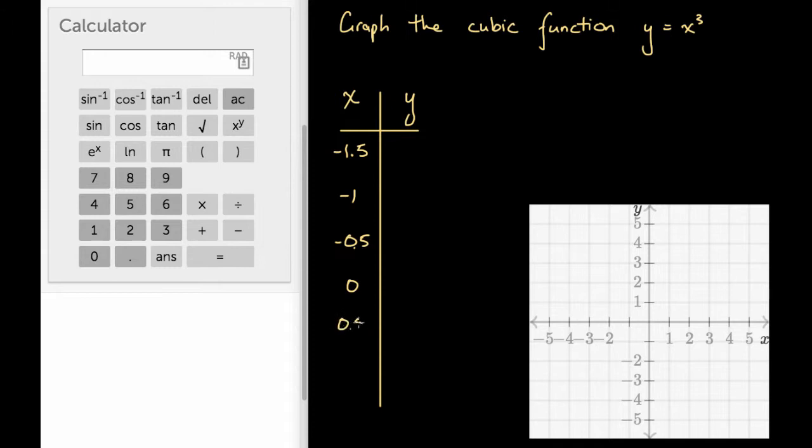0.5, 1, and 1.5. These are evenly spaced x values. They're around the origin, which is quite nice. Usually that's a good way to choose what x values you'll examine.